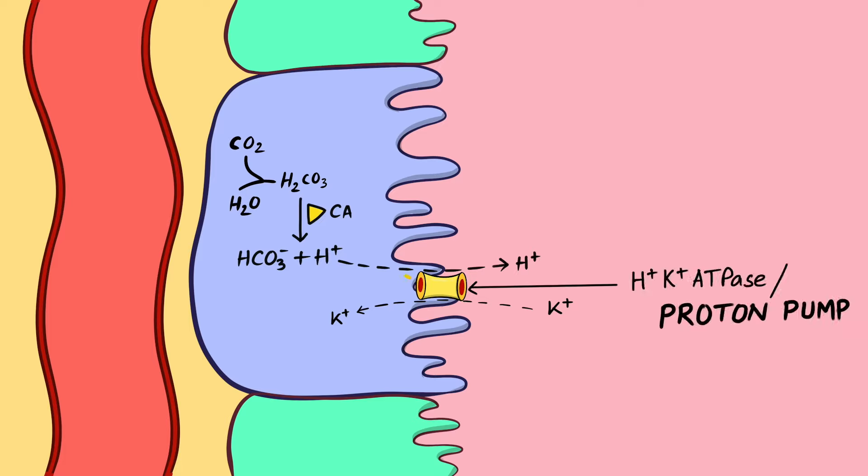Now the metabolic reactions inside parietal cells produce carbon dioxide which reacts with water to form carbonic acid. The enzyme carbonic anhydrase splits carbonic acid into hydrogen ion and bicarbonate ions. Hydrogen ion is now secreted into the lumen in exchange of potassium ions using a special pump. This pump on the luminal side is called hydrogen potassium ATPase or proton pump.